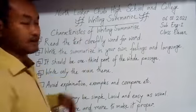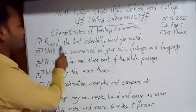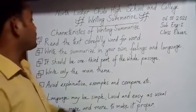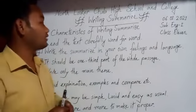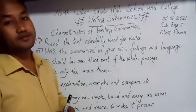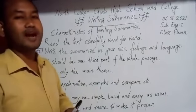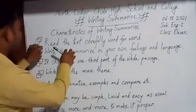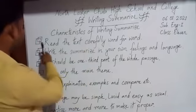Characteristics of writing a summary. Number one: read the text carefully, word for word. If you don't read the text carefully or attentively, it will be hard or difficult for you to know what to write in the summary. For this reason, you have to read more and more.